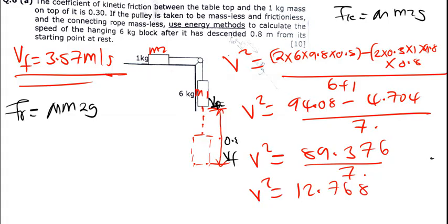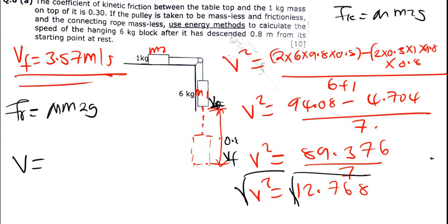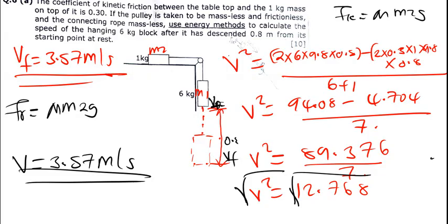Taking the square root of both sides: V = √12.768 = 3.57 meters per second. As you can see, the answer from the energy method and the answer from Newton's laws of motion are the same. The question specified to use the energy method, so that is the required approach. If no method is specified, you can use either.